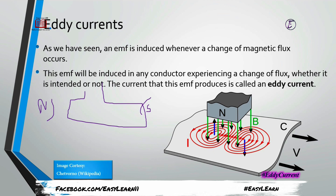This EMF will be induced in any conductor that experiences a change of flux — not only in our coil. Any portion or equipment that comes within the context of the core and changes its position, coming under the magnetic field, will also have an EMF induced in it. This becomes a headache for us and is called eddy currents, because there is no complete path for the current to flow.